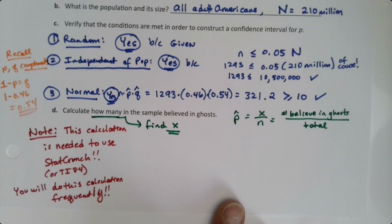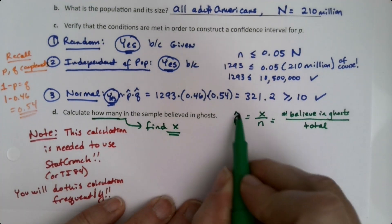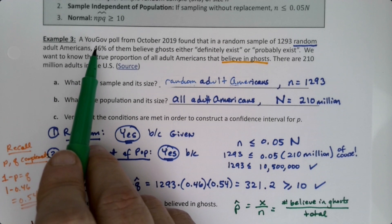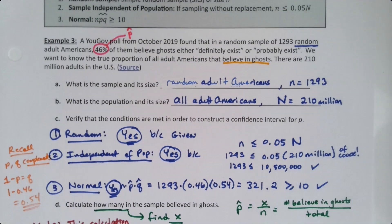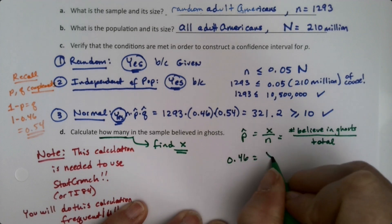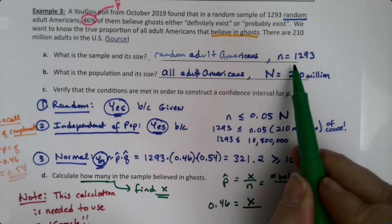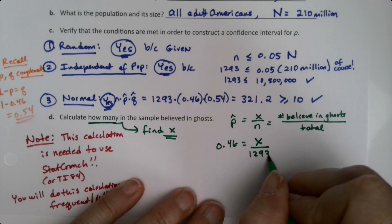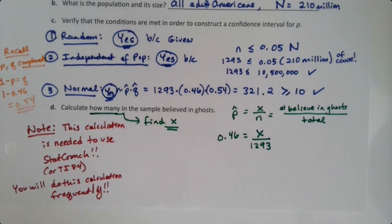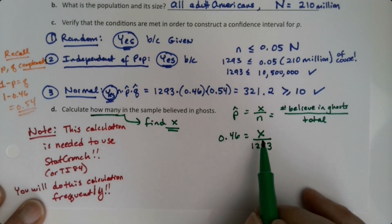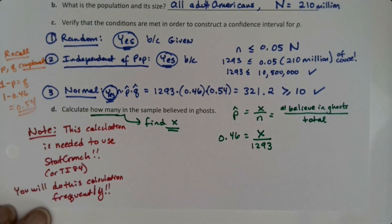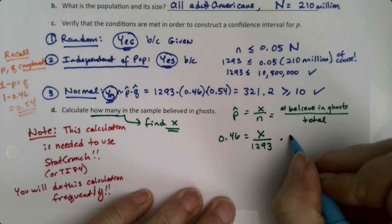It's not a particularly difficult problem because we know p hat—it's 0.46. So 0.46 equals x, which I don't know, but I do know lowercase n because I set it right up here and used it three times—it's 1293. Now you just have to remember a bit of algebra. When you have division like this, you multiply to get rid of it. So I take both sides and multiply by 1293. If I do it to the right to get rid of that, I have to do it to the left to keep it fair.